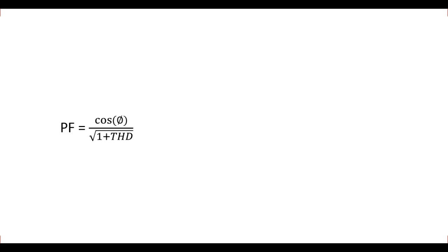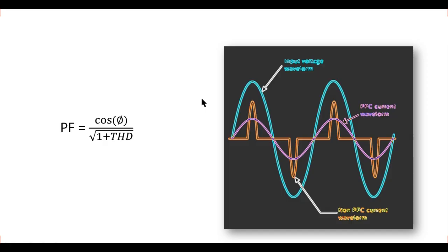Whenever in your household applications — like your TV, your washing machine, your refrigerator — all are equipped with a PFC circuit. What happens without PFC? Let us have a look at this waveform. This is our AC voltage, and this waveform shows the current waveform without a power factor correction circuit. If you take the total harmonic distortion for this current waveform, it is having huge THD — it could be more than 100%. This much THD is going to reduce the power factor of your system.